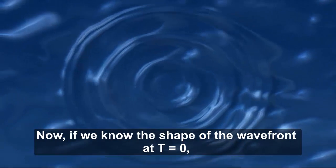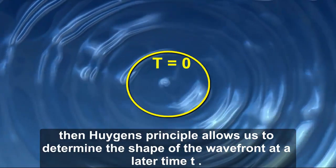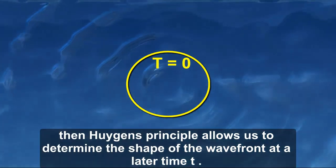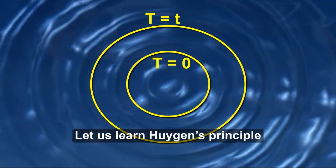Now, if you know the shape of the wavefront at t equals zero, then Huygens' principle allows us to determine the shape of the wavefront at later time t. Let us learn Huygens' principle.